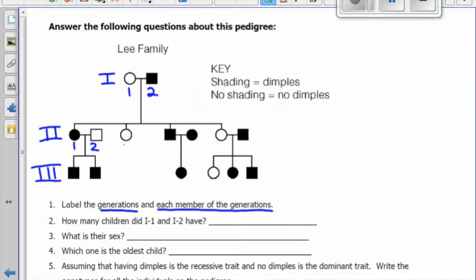Going from left to right. So in the first generation, we have two. In the second generation, we have seven. And in the third generation, we have six individuals. Now we can refer to each individual by their number. This one is 2-7.